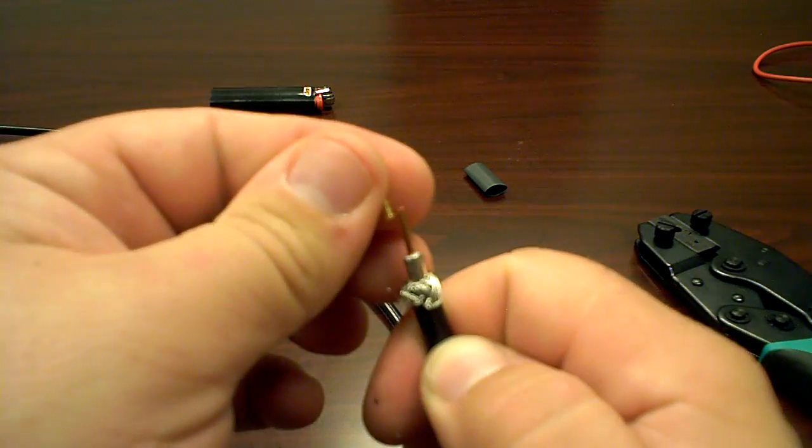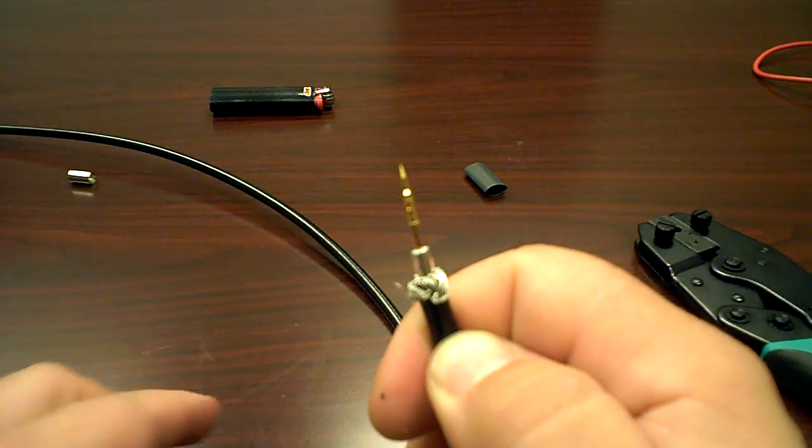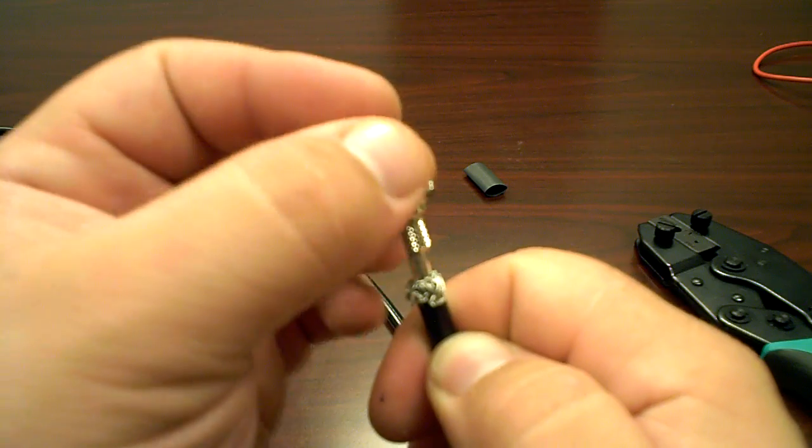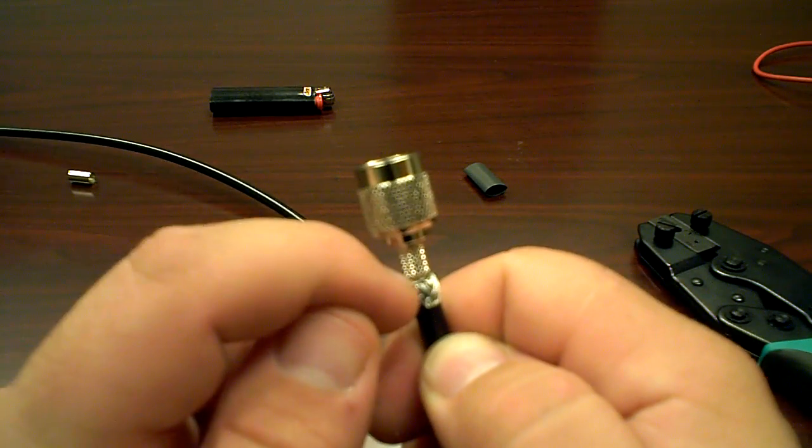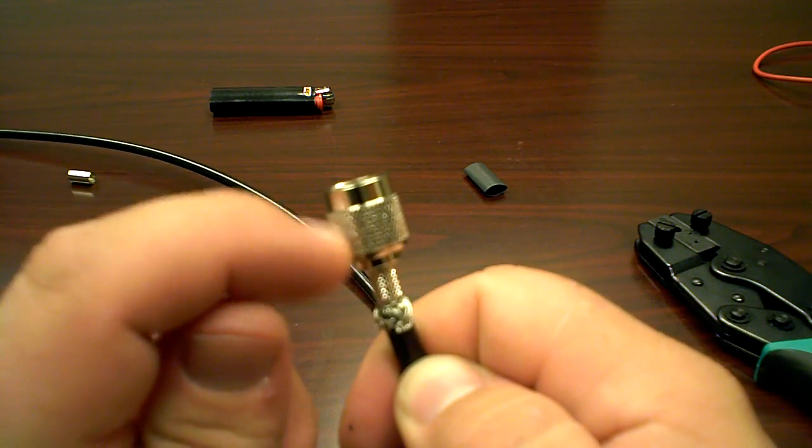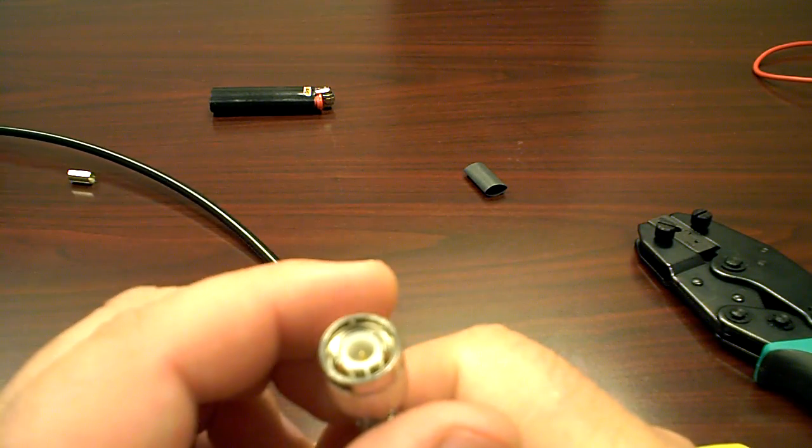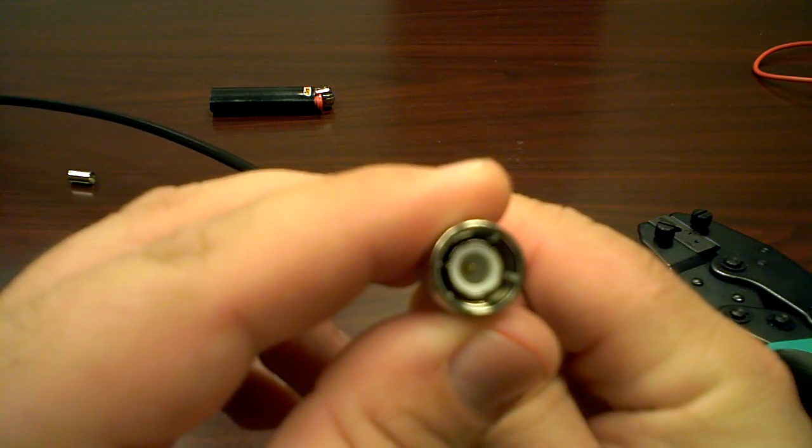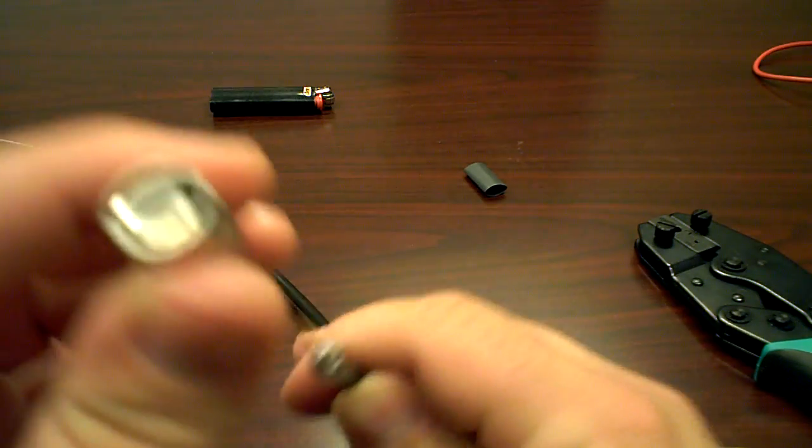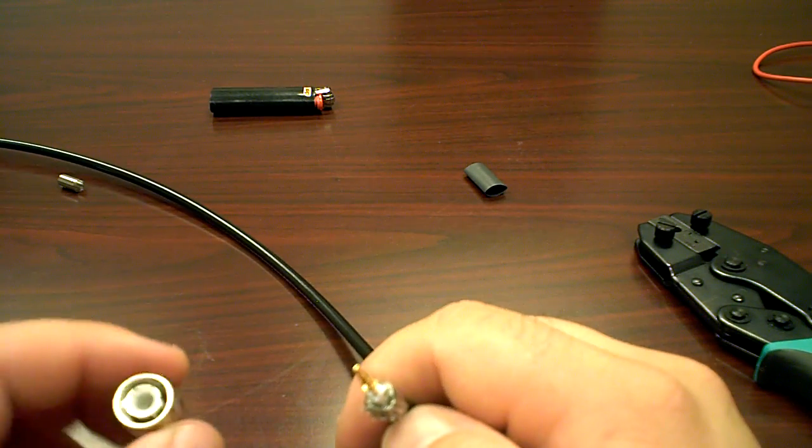So you may have to cut this and shorten it to make sure that that lines up properly. But you always want to make sure that this seats firmly against the braid here, because that's actually your ground. It's going to ground the outer jacket of this. And your center conductor is going to be your hot.